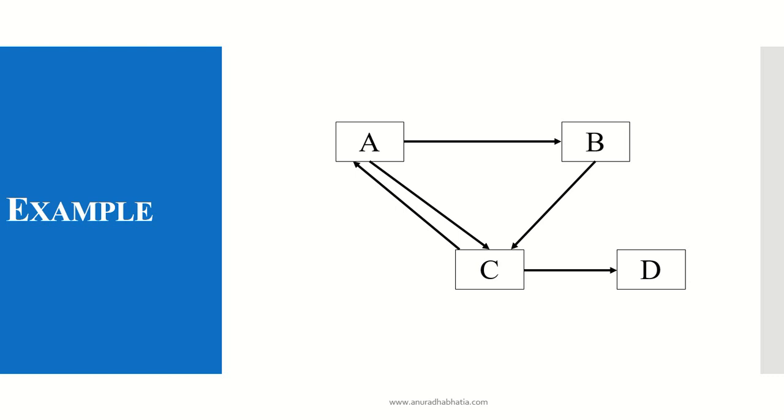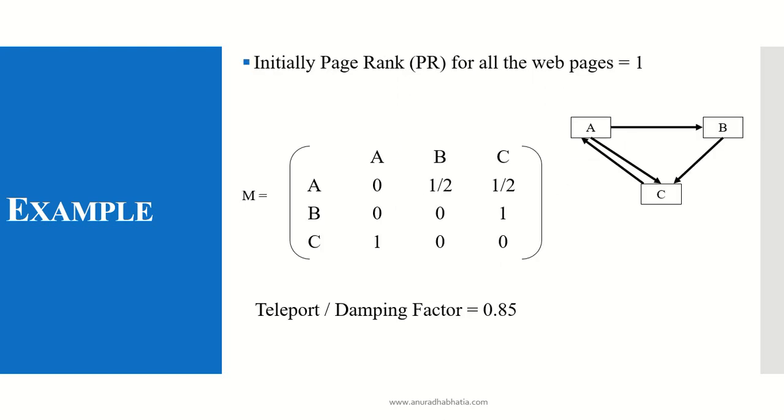Now, let's take this example. Here, we will be using the matrix for calculating the page rank. Teleport factor or the damping factor given for this example is 0.85. The first step that we do is we calculate the number of outgoing links from a particular node or a web page. We have three web pages, A, B and C. We create a matrix out of it.